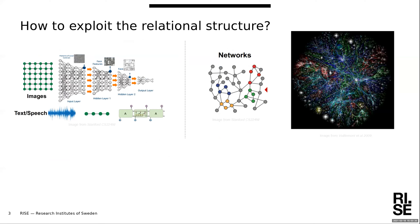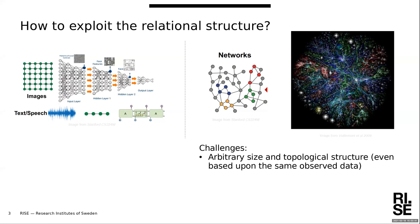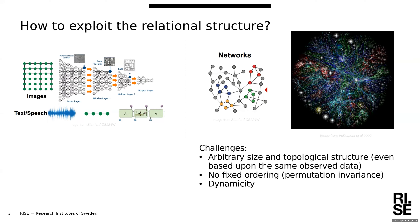Advances in machine learning, particularly in deep learning, have been developed for fixed-grid or fixed-structure data — both for images and speech. But when you deal with networks, there are challenges. First, we have arbitrary-size networks. On the screen you see on the left a simple graph, and on the right an example from 2019 of the internet. We have no fixed ordering of nodes compared to an image. And we have dynamicity — the graph can change over time, as in social networks where people are added or removed.